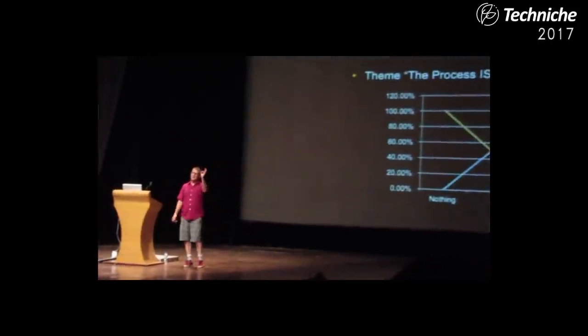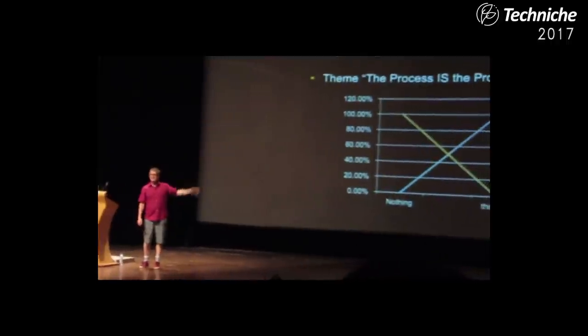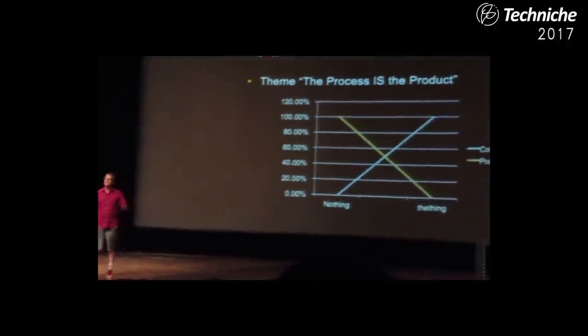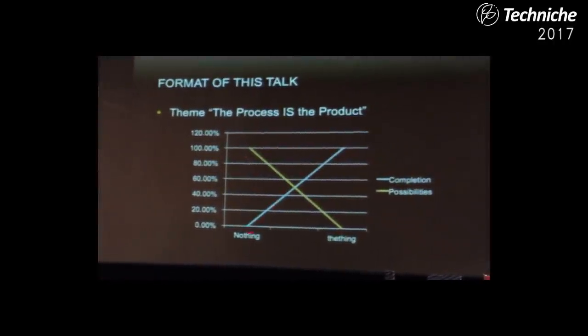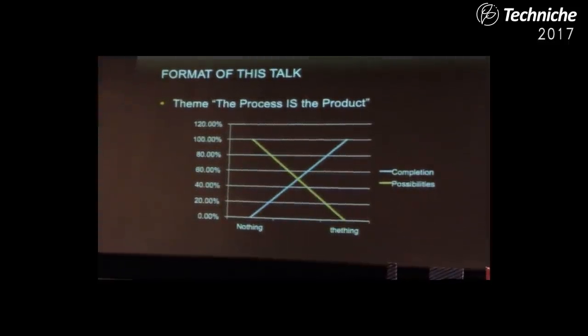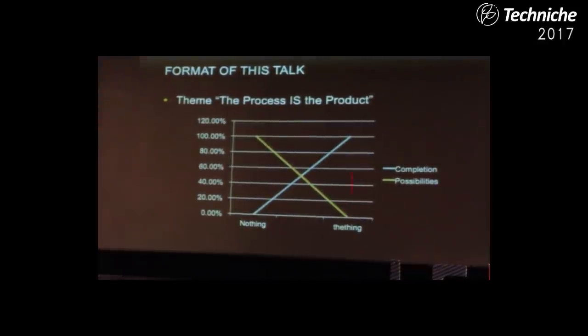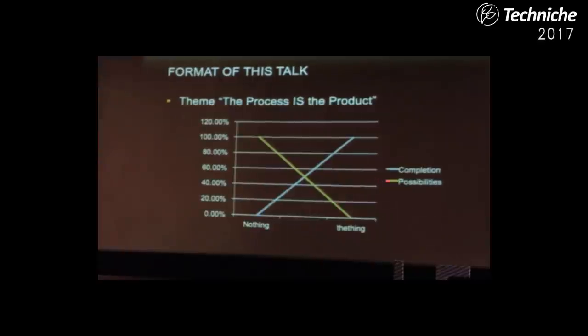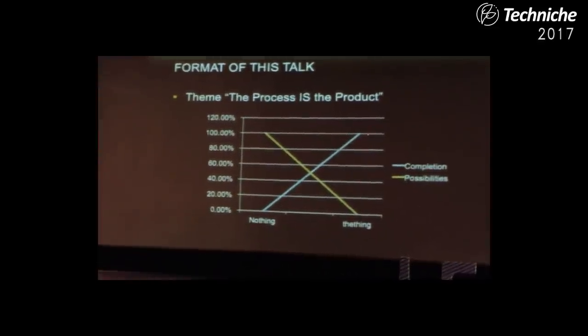This is something I like to think about sometimes — a look at process. Over here on the left you have the beginning. The blue line is completion — how much you've gotten done. And the yellow represents the possibilities of what you can do. At the beginning, you haven't got anything done — zero done — and everything's possible, because you haven't eliminated any possibilities in the process. But as you go, in this case it's a linear inverse: more things get done, fewer things become possible. And by the end, you have the thing — it's the end and nothing's possible.